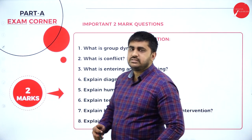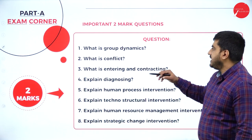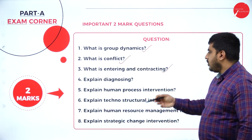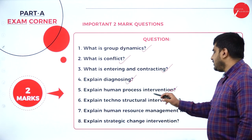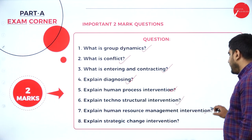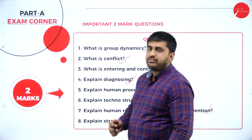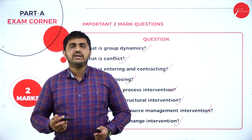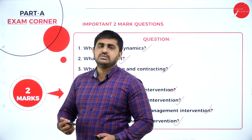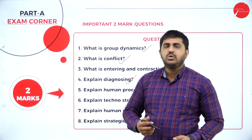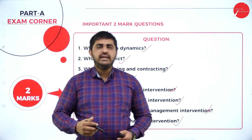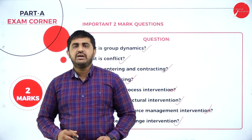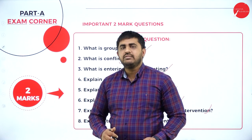Now for important 2-mark questions: what is group dynamics from Chapter 2, what is conflict, what is entering and contracting, what is diagnosing, human process intervention, technostructural intervention, human resource management intervention, and strategic change intervention. On top of that, anything from your 15-mark and 10-mark topics — what is personality, perception, organizational behavior, team dynamics, group dynamics, planned change, OD intervention, or OD — can be asked for 2 marks. With this we have discussed the model paper along with the important questions. Hope you are clear. Thank you.